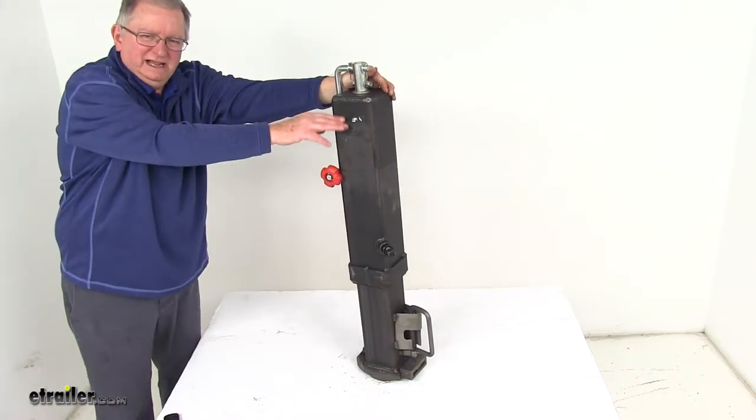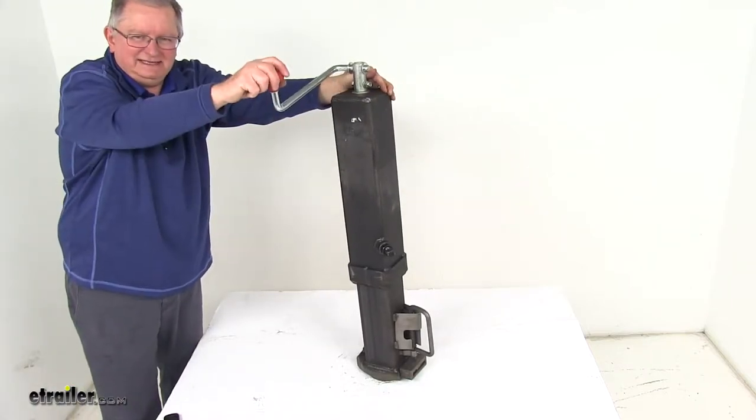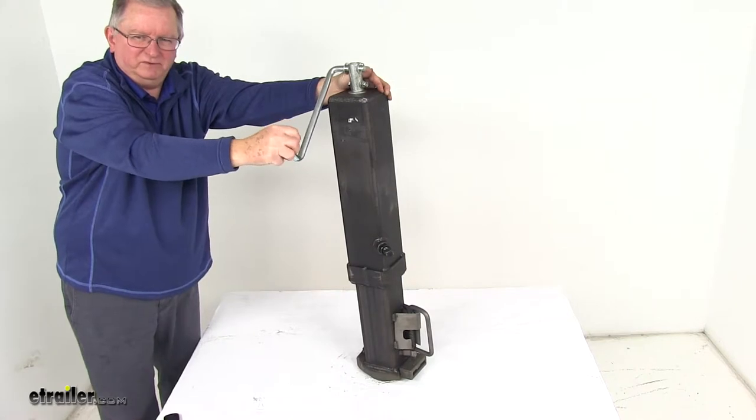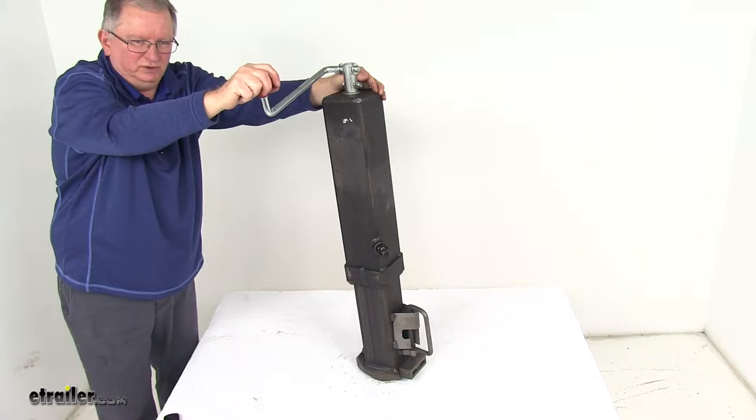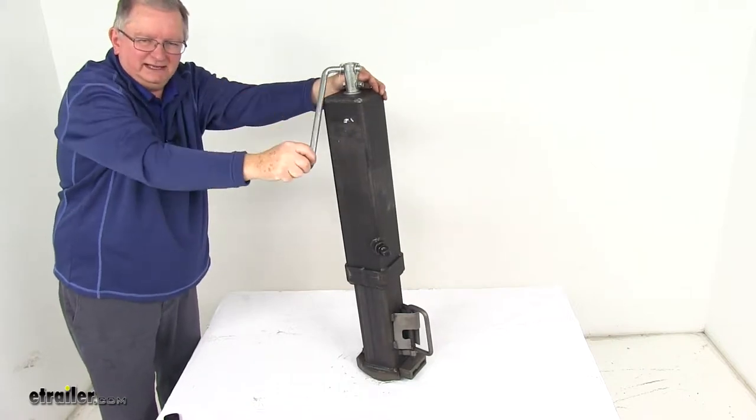This one has a top line handle with a red claw grip on it for comfortable, easy cranking, and it will easily fold away for storage. You can raise and lower your gooseneck by just cranking it like that.